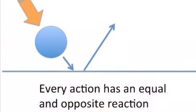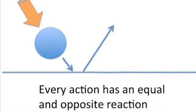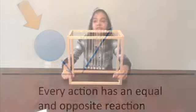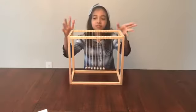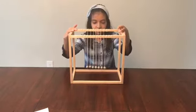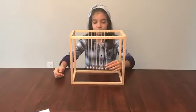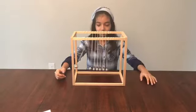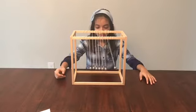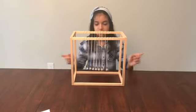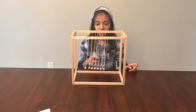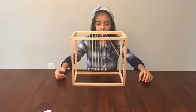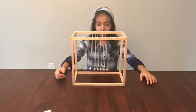Now for the third law. This law states that every action has an equal and opposite reaction. I will explain the law using Newton's Cradle. When a ball on one end is pulled back and let go, it swings into the other ball. The ball on the opposite end then swings up with an equal force to the first ball bearing. The force of the first ball causes an equal and opposite reaction to the ball at the other end.